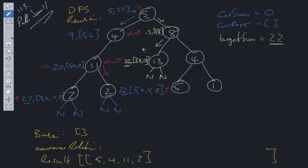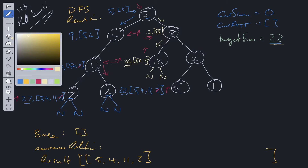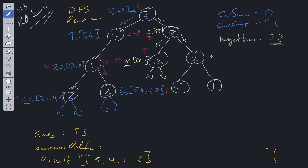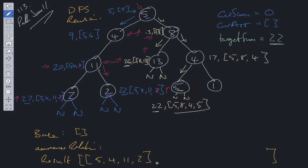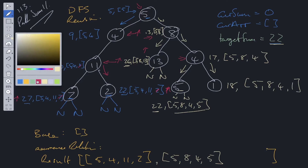We check current sum against target sum — they're not equal — so we backtrack. Node 8 has another path so we go down to node 4. Current sum is 17 and the array is [5, 8, 4]. Going down the left path we get current sum 22 with array [5, 8, 4, 5]. We've reached a leaf node and 22 equals 22, so we push the current array into result. We backtrack and check the other child: current sum is 18 with array [5, 8, 4, 1]. That's not equal to target sum, so we backtrack.